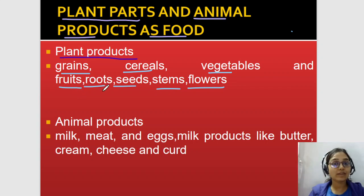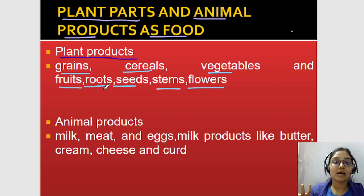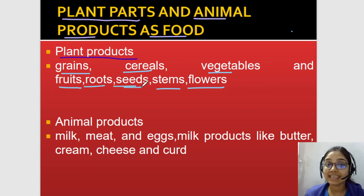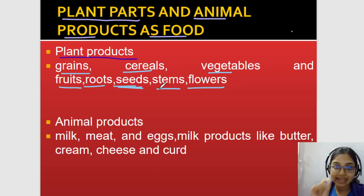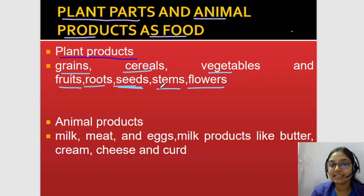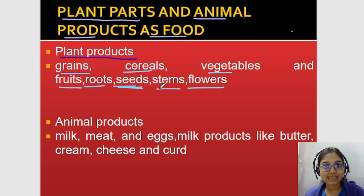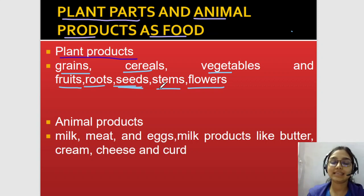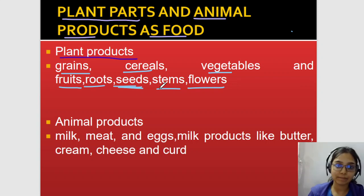Roots are also edible — for example, carrots and beetroots. Then seeds of plants are also edible — like pumpkin seeds, chia seeds, flax seeds, sesame seeds (yaani til). So there are many, many seeds which we can consume as food.